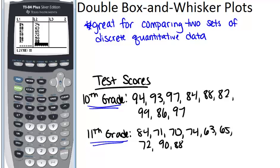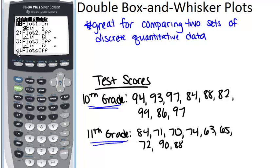First you need to tell the calculator that you want two stat plots and you want them both to be box and whisker plots. To do that go into second y equals so that you're in stat plot. We can see that we already have plot one turned on and it is a box and whisker plot for list one.